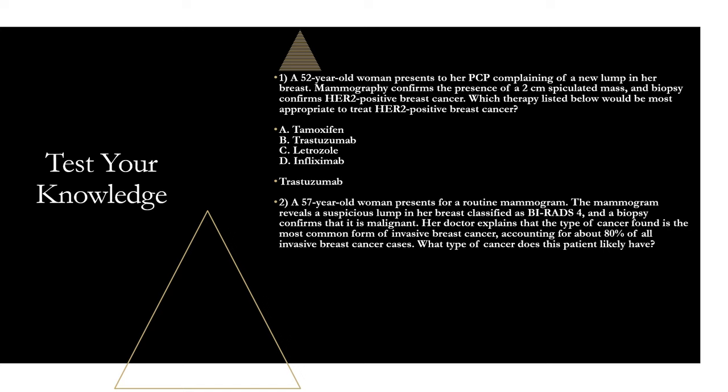Question 2: A 57-year-old woman presents for a routine mammogram. The mammogram reveals a suspicious lump classified as BI-RADS 4, and biopsy confirms malignancy. Her doctor explains the cancer found is the most common form of invasive breast cancer, accounting for 80% of all invasive breast cancer cases. The answer is infiltrating ductal carcinoma — the most common type of invasive breast cancer, accounting for 70–80% of invasive lesions.